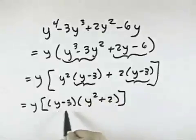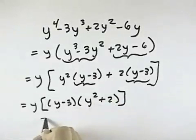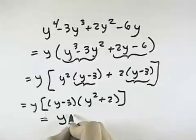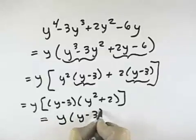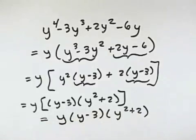Looking at each of these, there are two terms each, but neither one is the difference of squares, and neither one is the sum or difference of cubes. So that means our first factor is y, our second factor is y minus 3, and our third factor is y squared plus 2, none of which can be broken down any further.